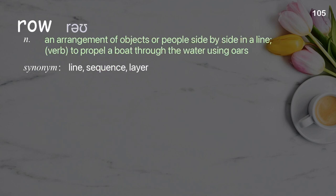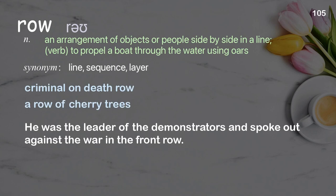Row. An arrangement of objects or people side-by-side in a line; verb: to propel a boat through the water using oars. Examples: criminal on death row, a row of cherry trees. He was the leader of the demonstrators and spoke out against the war in the front row.